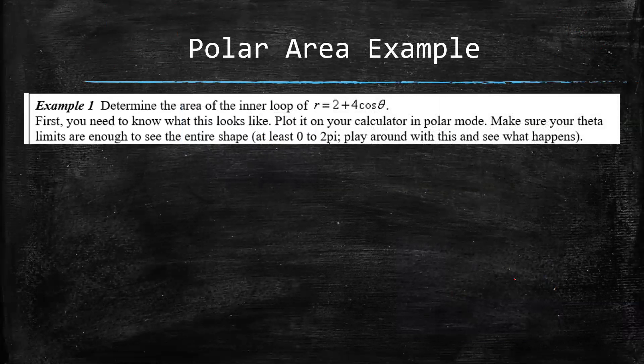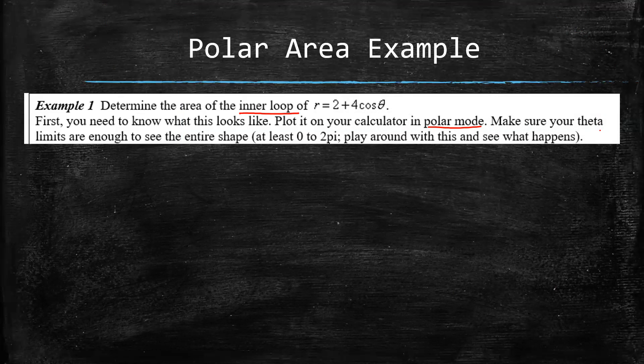Now let's take a look at an example. We are going to determine the area of the inner loop of r equals 2 plus 4 cos theta. So first we need to know what this looks like. And so I'm going to ask you to pause the video and plot it on your calculator in polar mode. And make sure your theta limits are enough so that you can see the entire shape. You can always play around with it if you're not sure.